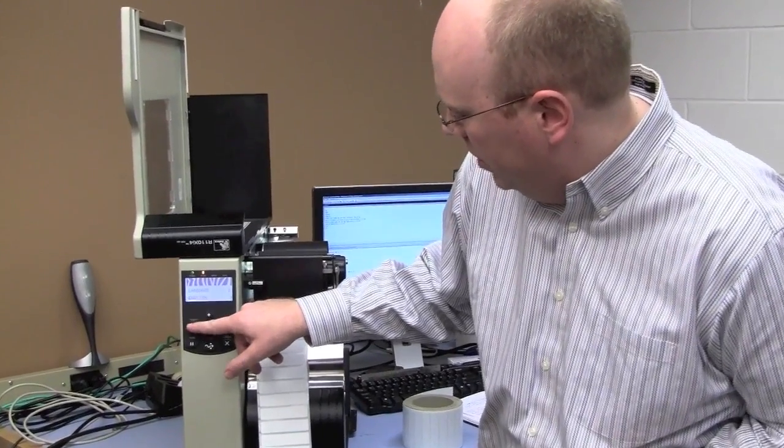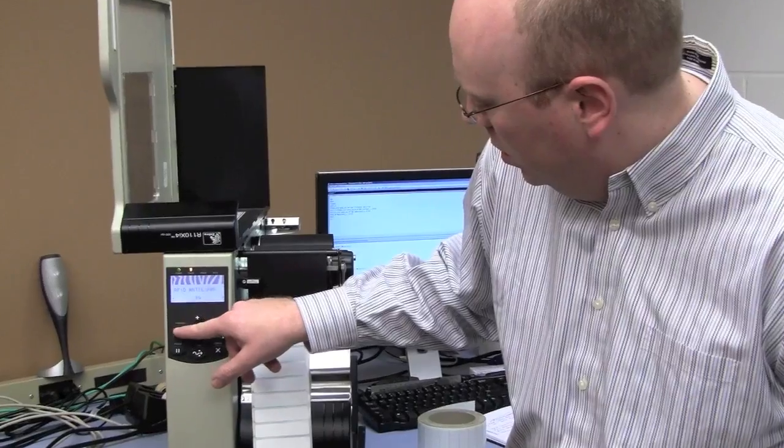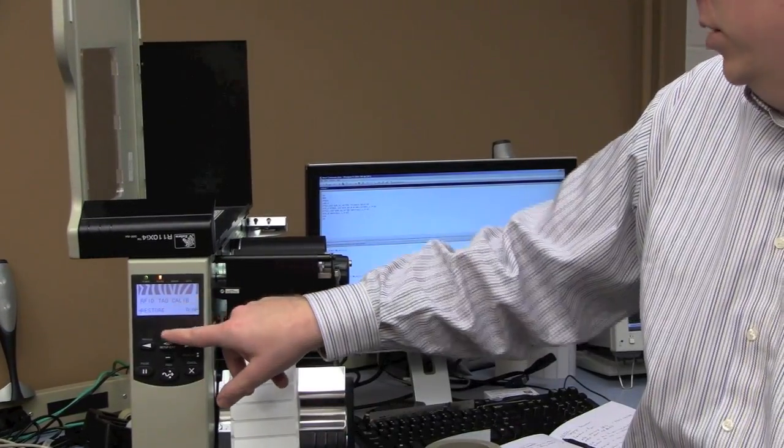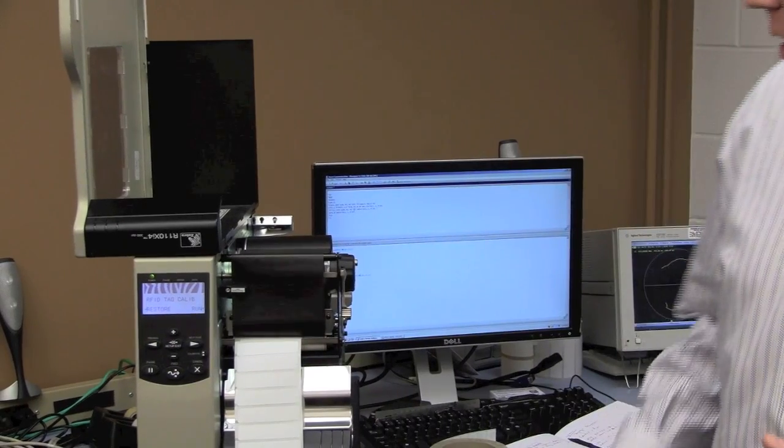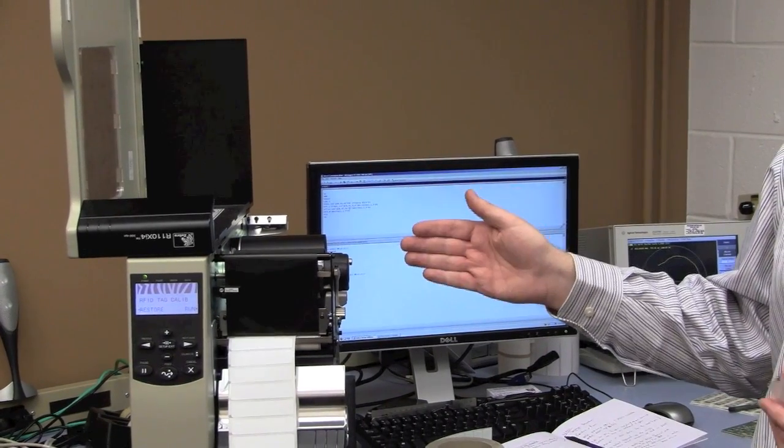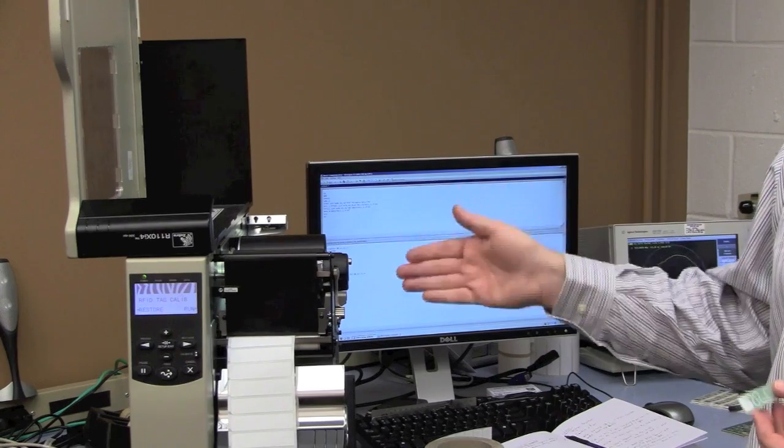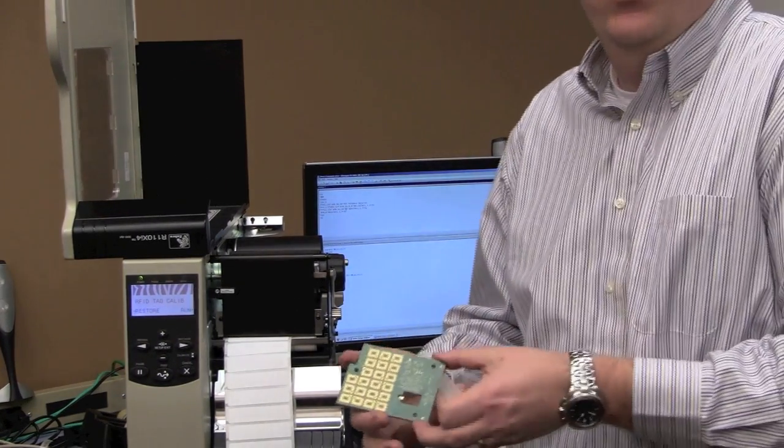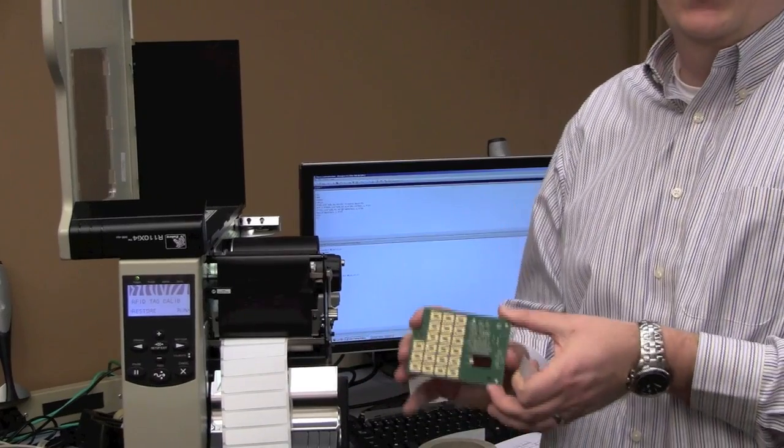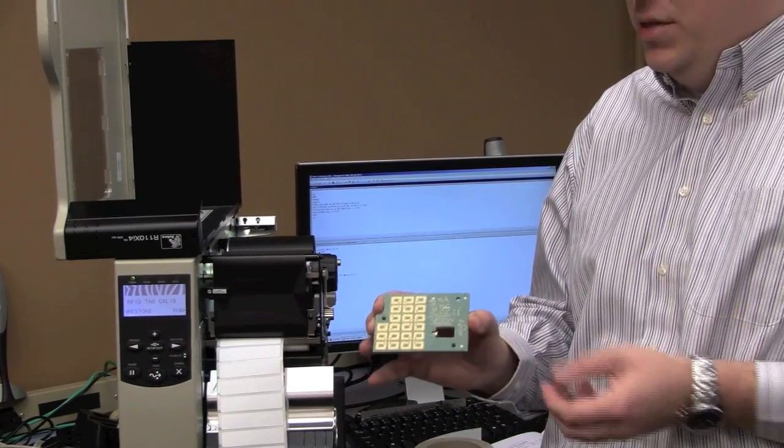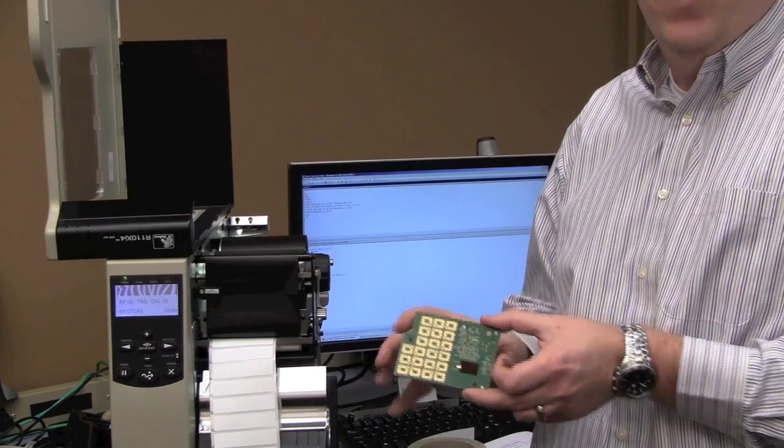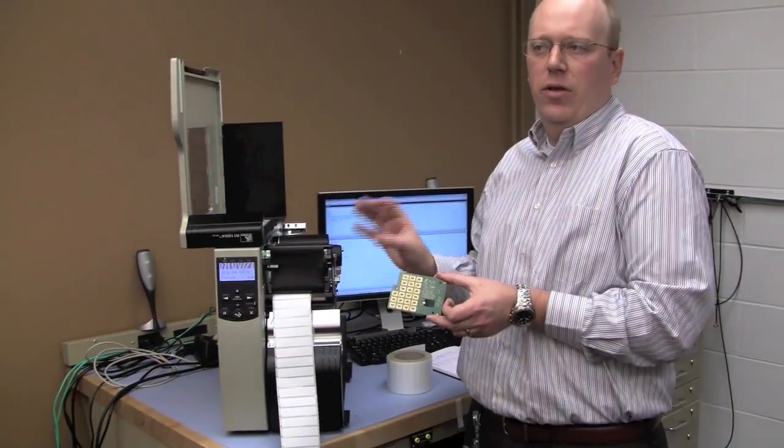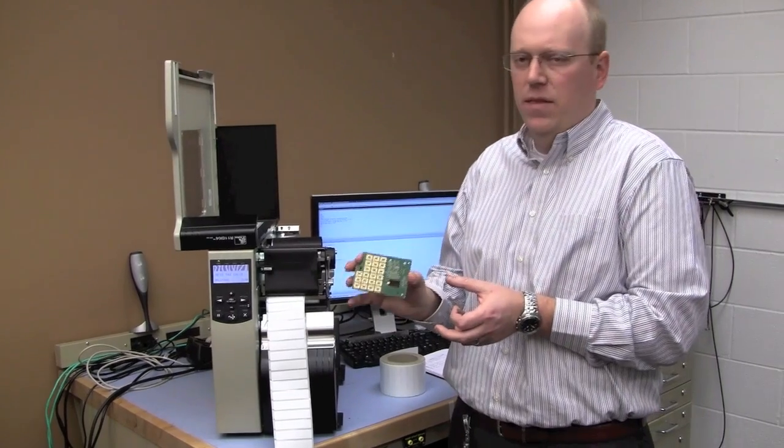I go into the menu and scroll to the left over to the command that says RFID tag calibrate. And I just press the run button. As I press this, the printer back feeds the label into the printer. It's stepping in one millimeter steps backward. And throughout that process, it's actually scanning through each of the individual elements in the encoding array. This is the patent pending Zebra encoding array that's inside this printer, and this is really what provides us the flexibility to encode these inlays and to automatically do this calibration procedure.